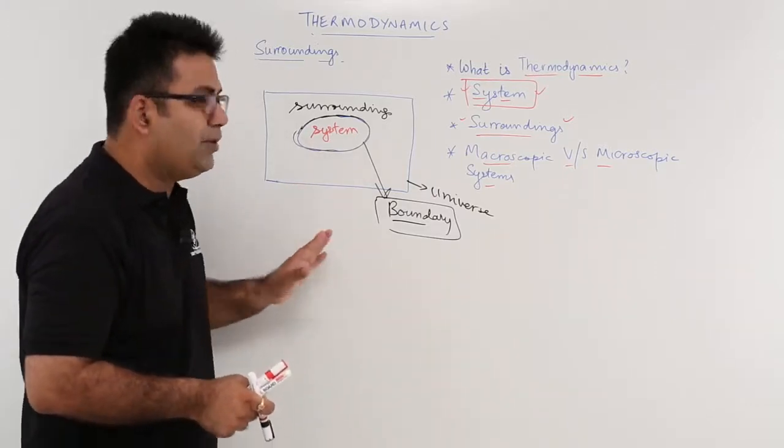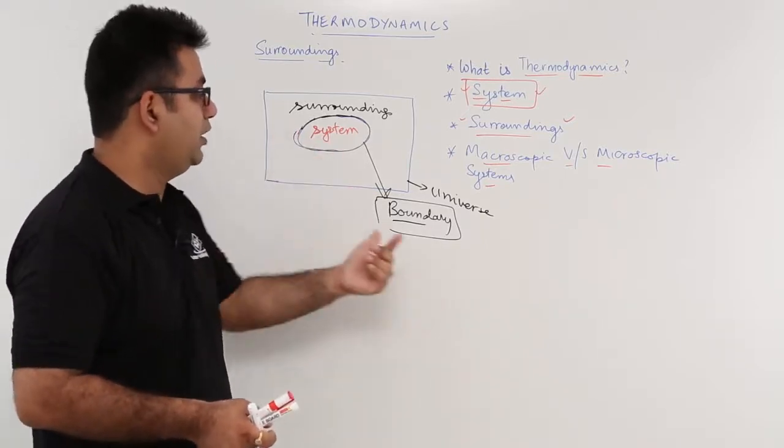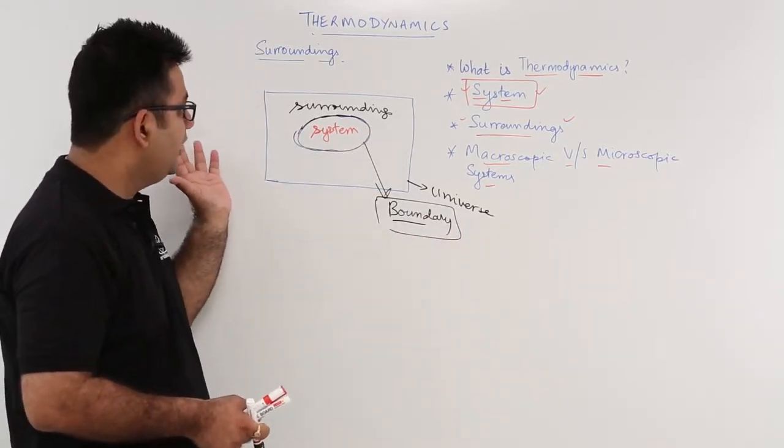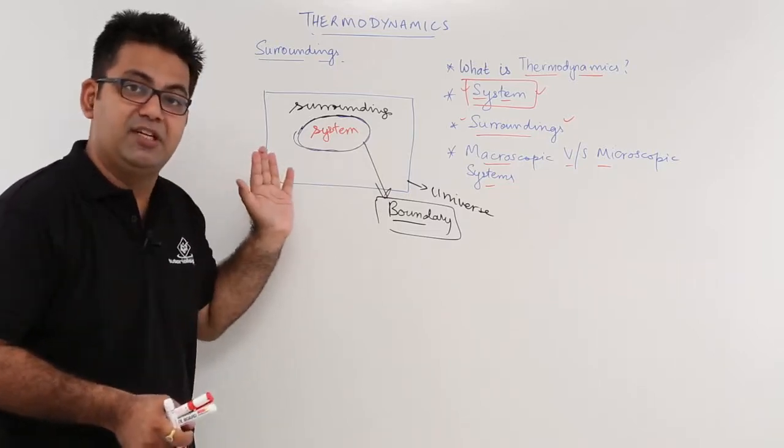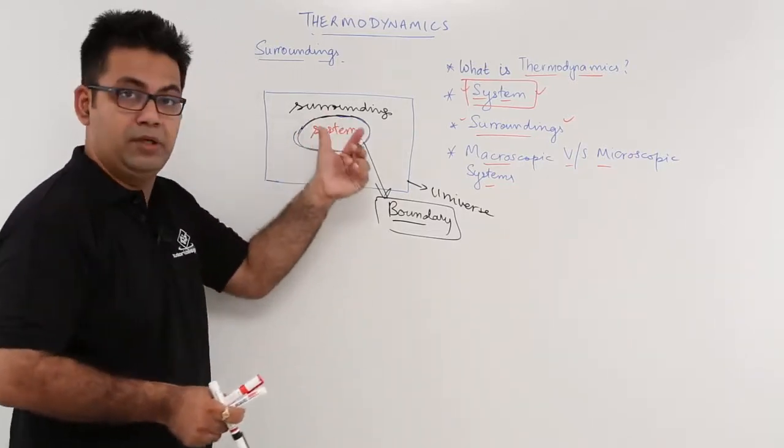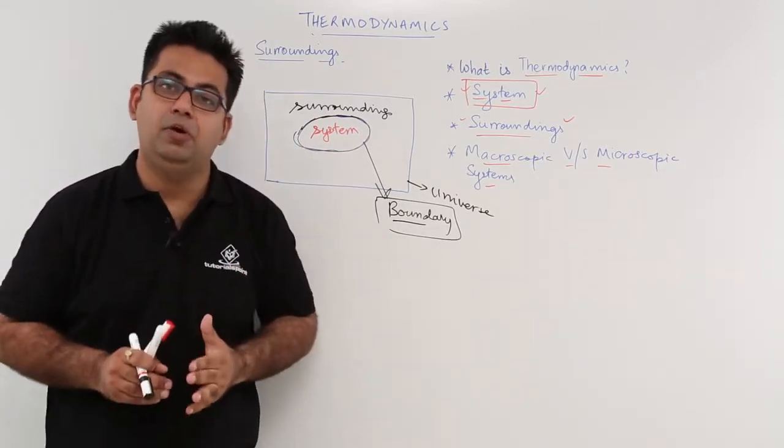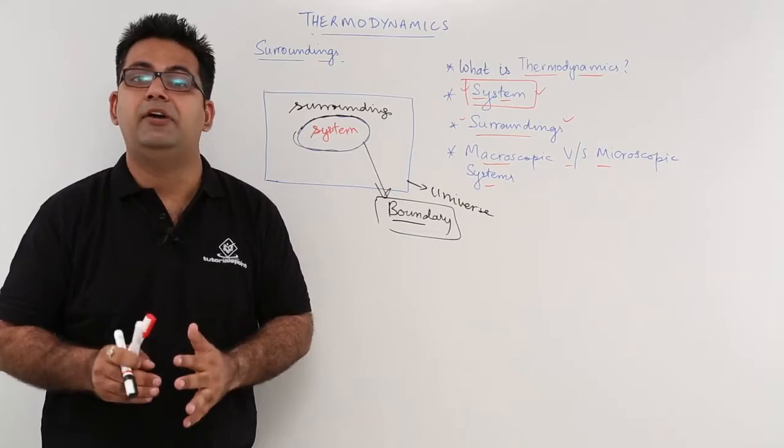I hope you understood what is a surrounding. System plus surroundings is called universe. And the entity which is differentiating or which is separating system and surroundings is called a boundary. Now, in the next video, we discuss about the different kinds of systems.